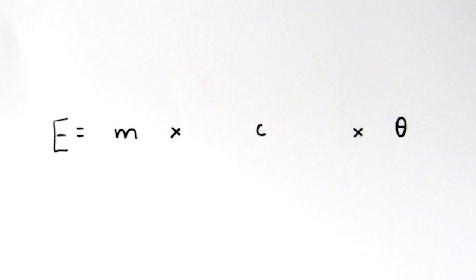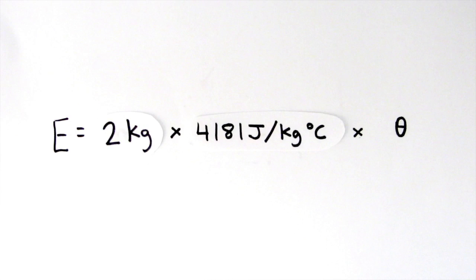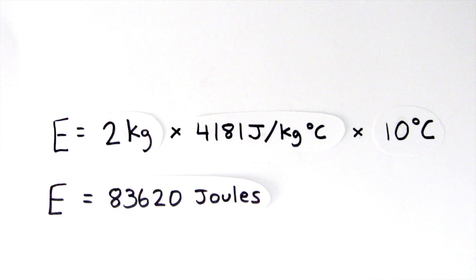So for this example, the formula would be 2 times 4,181, which is the specific heat capacity for water, times 10, which equals 83,620 joules.